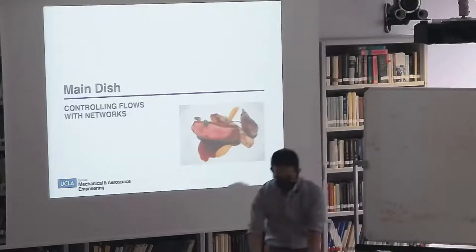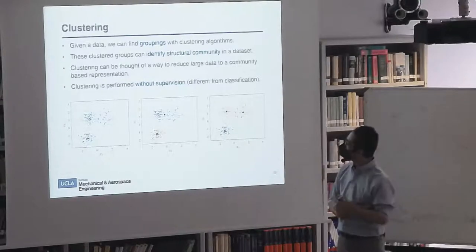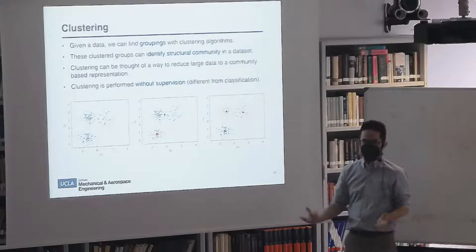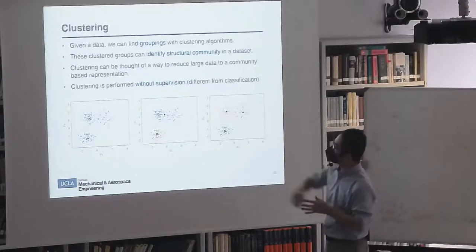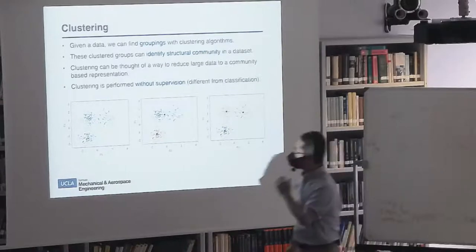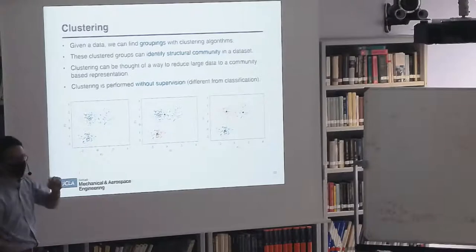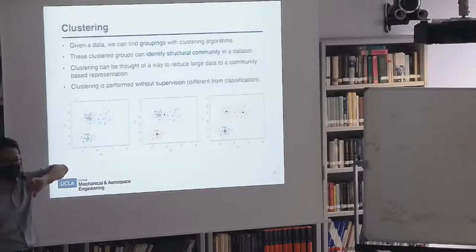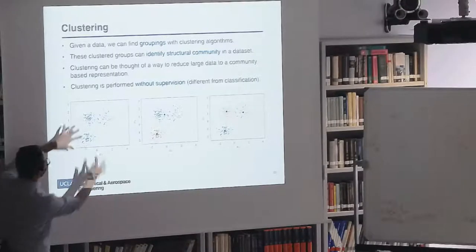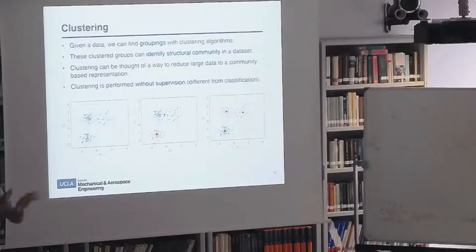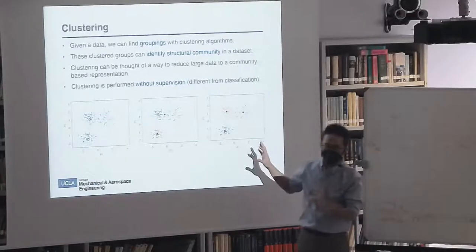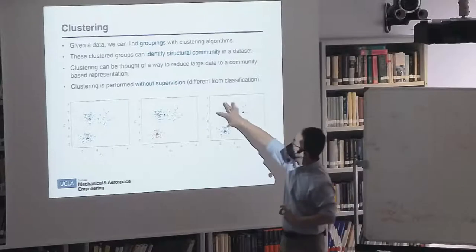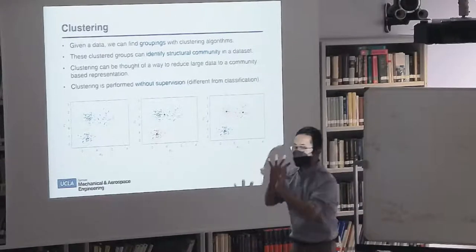Now I'll switch gears and talk about data-driven control. Let me start with clustering. If I give you a lot of data, there are ways to pull out communities. Using k-means clustering on a 2D example, your eyes can pull out features — you might see one large cluster or maybe three groups with centroids. You could collapse the data into three points and do interesting analysis. That's the basis of what comes next.